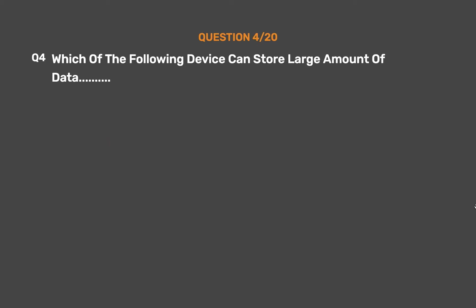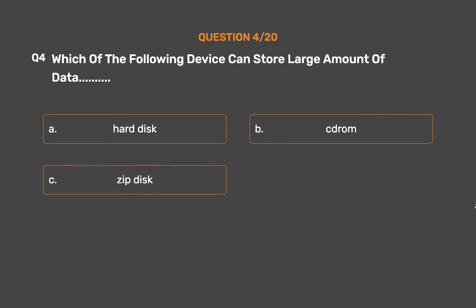Question number 4. Which of the following devices can store a large amount of data? Option A: Hard disk. Option B: CD-ROM. Option C: Zip disk. Option D: None of these.